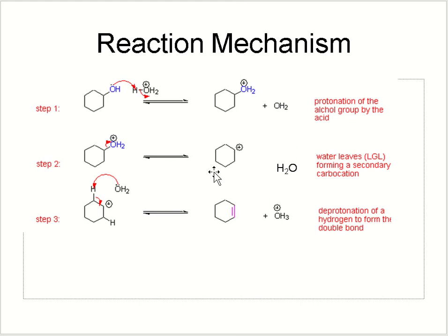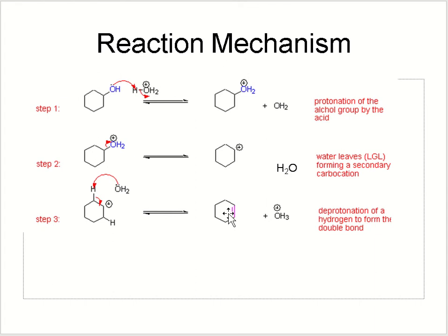The water leaves, forming a secondary carbocation, which can be stabilized by resonance. That is why elimination is preferred over substitution. In the third step, because there is a carbocation and electron deficiency, the oxygen from the acid with its lone pair attracts a proton from the adjacent beta carbon. When that proton is removed, the two carbons form a pi bond. This deprotonation forms the double bond, and cyclohexene is produced. So the three steps are: protonation, water leaving to form a carbocation, and deprotonation to form the pi bond or alkene.